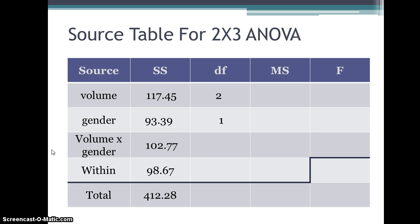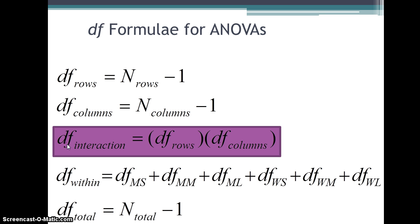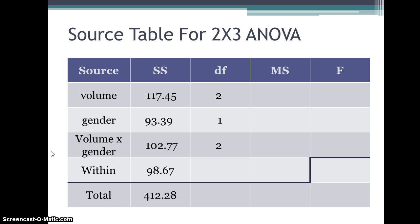Now, this next part, we're going to talk about the degrees of freedom for the interaction, which is the degrees of freedom for the rows times the degrees of freedom for the columns. And here, if you multiply two times one, you get two. So there's degrees of freedom for the interaction of two.